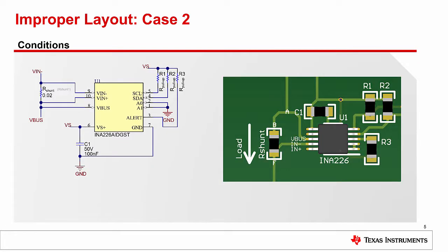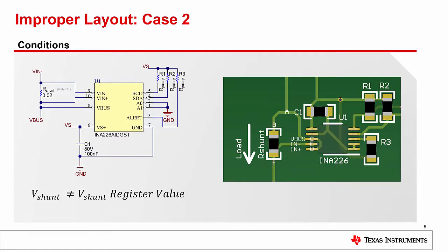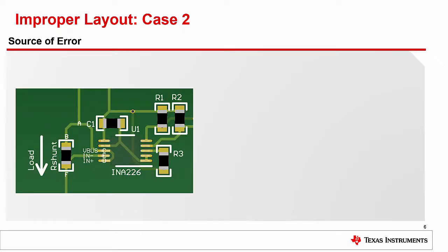Now let's look at another case. Here we have one of our digital power monitor devices, the INA 226, measuring some load. And yet again, we are getting a discrepancy between the measured input and the expected output. As the schematic yet again looks flawless, we decide to take a closer look at the board layout. Based off the prior case, can you see what the issue might be? If you guessed this trace from node B to node A would contribute error because it is in series with R shunt and contributes to the sense voltage potential, you are correct. However, there are some other details to consider.